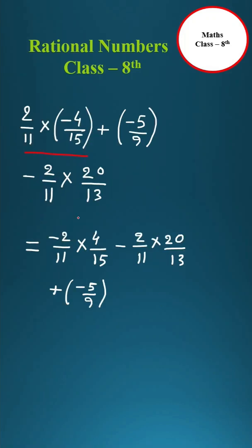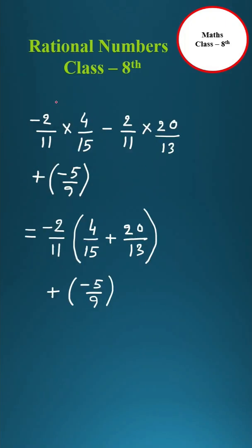This can be written as minus 2 by 11 into 4 by 15, then write this term, then plus minus 5 by 9. Here and here take minus 2 by 11 common inside the bracket 4 by 15 plus 20 by 13.